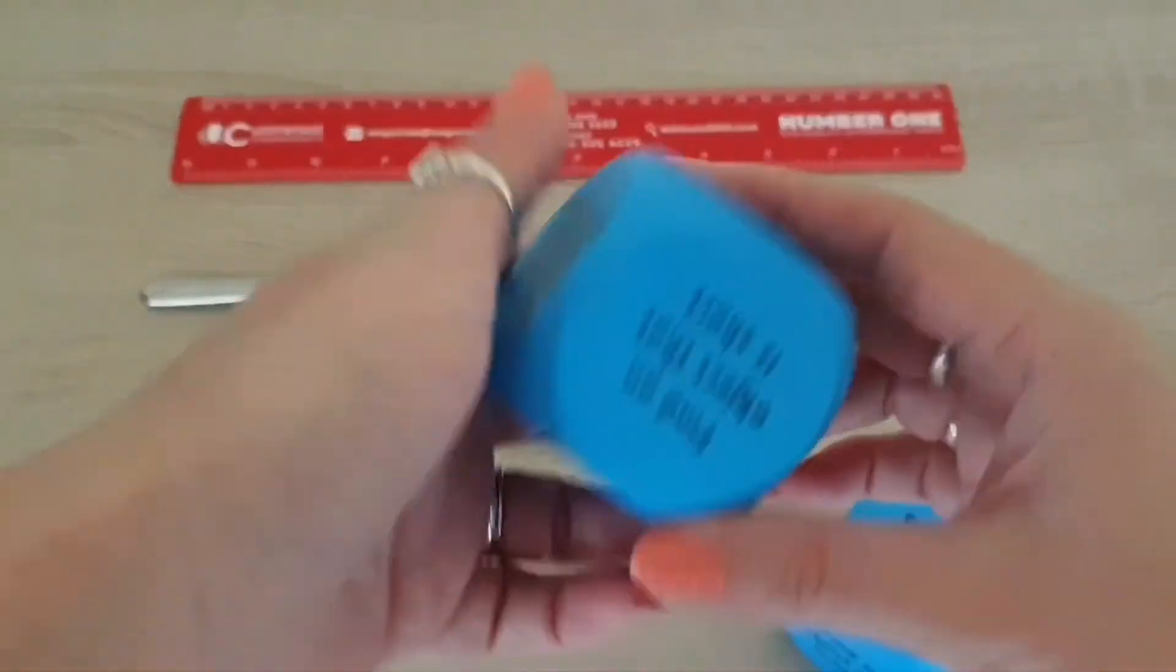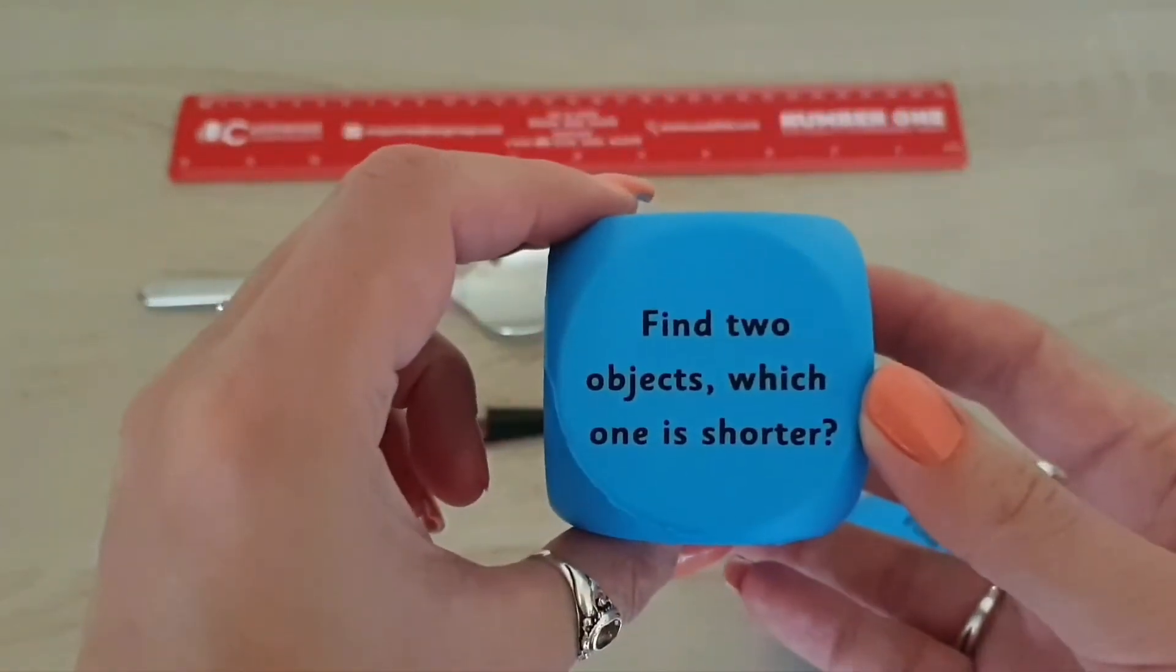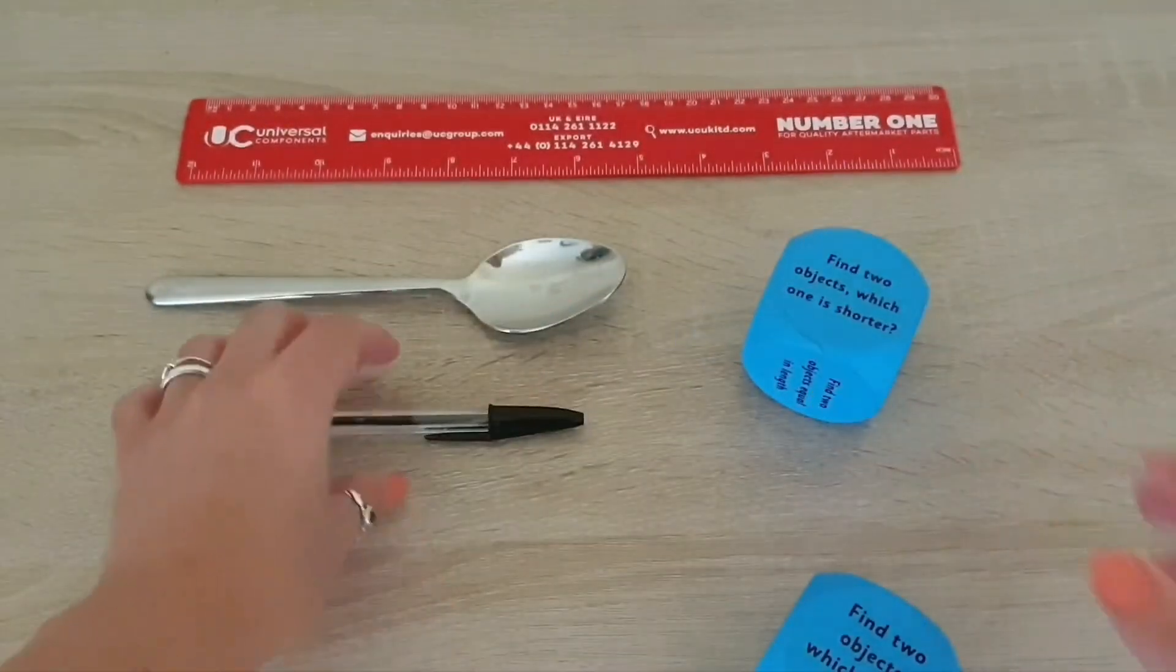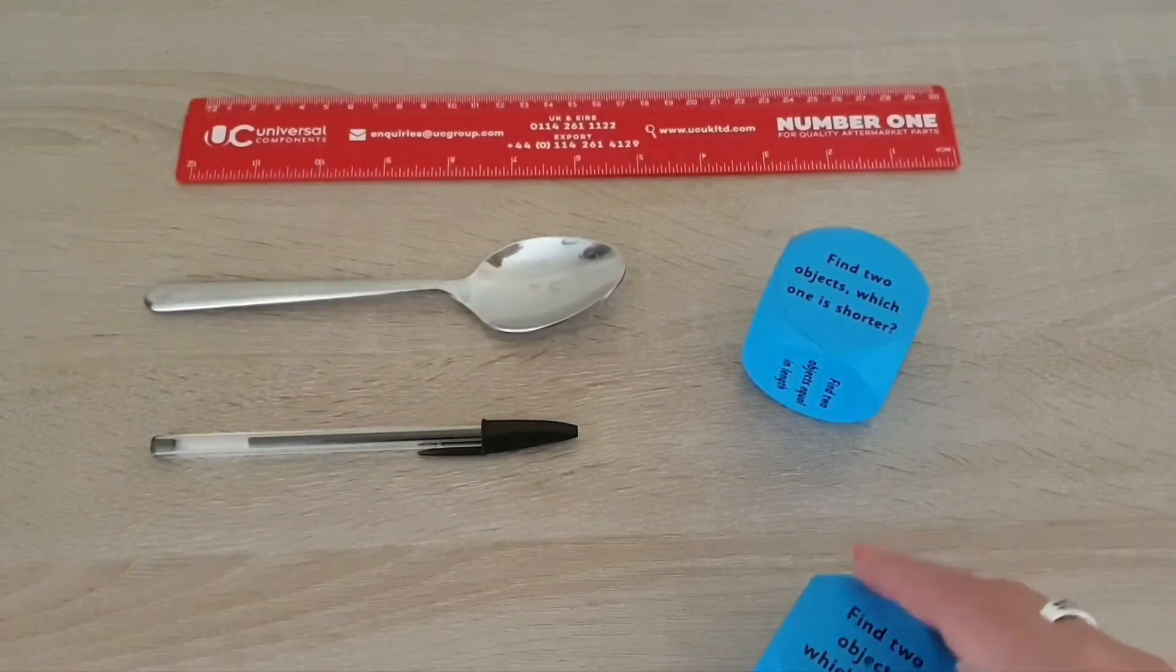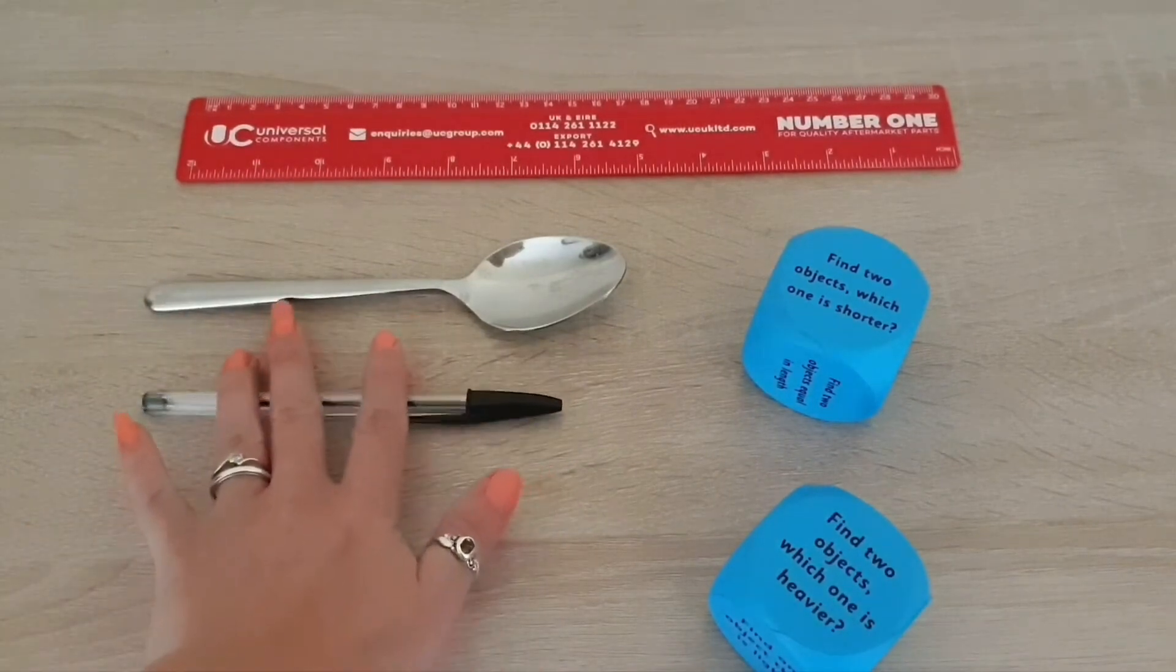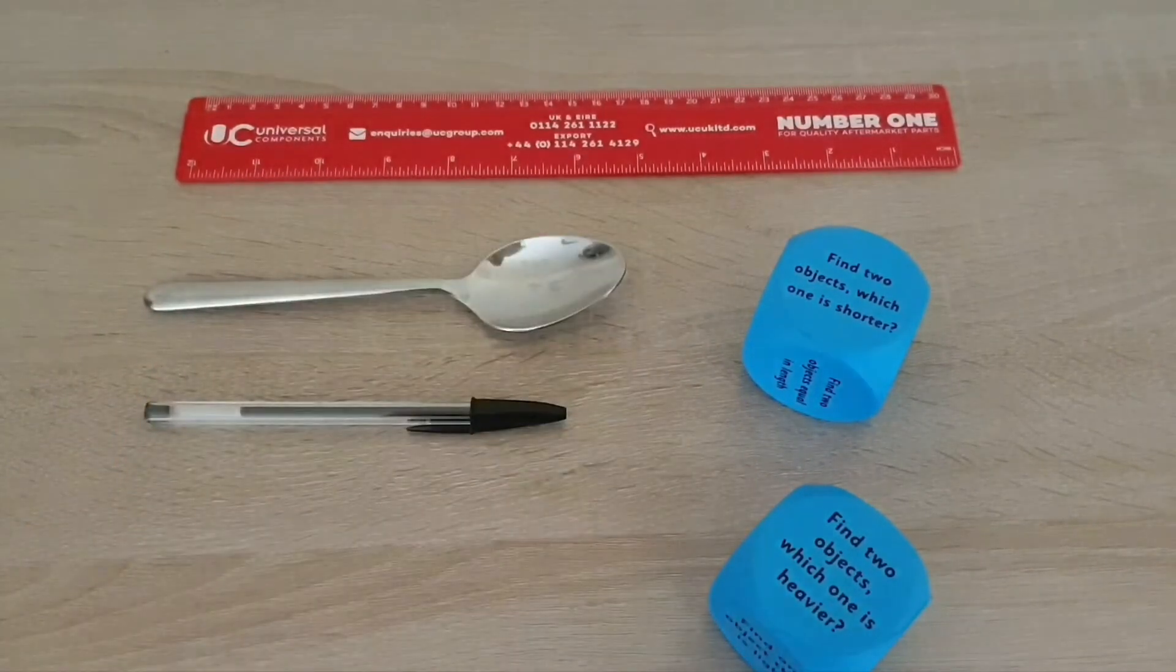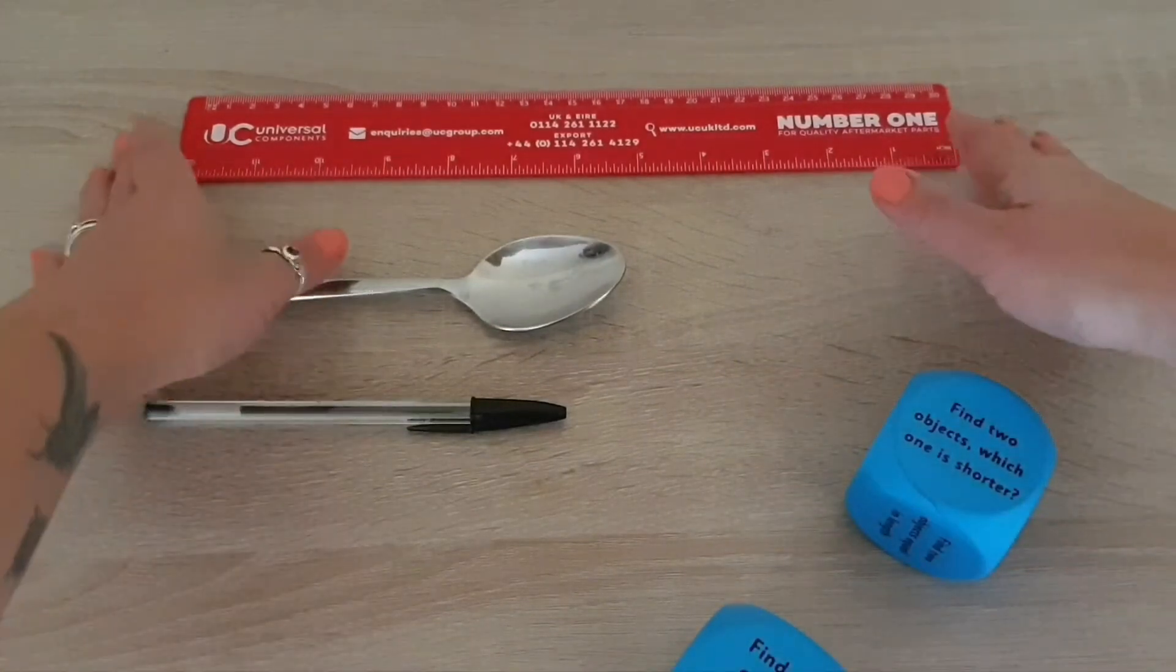So maybe we would have a look at one of the activities such as find two objects, which one is shorter. Here I have a pen and a spoon. Obviously at first children can do this just by looking at them by eye or by laying the two objects together to determine which one is the longer and the shorter object. However, they can also do it using our ruler.